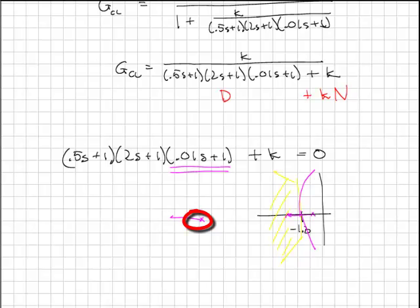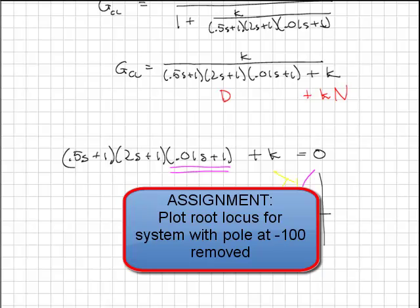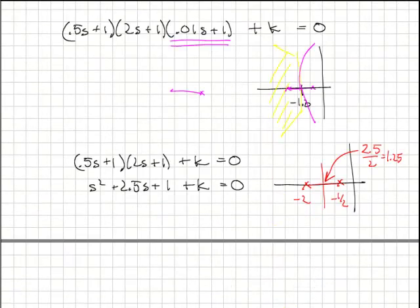A cheating solution is to say, this part of the system is so fast that I'm just going to pretend that it's not there and solve only the second order system. Well, let's see what happens if we solve only the second order system.